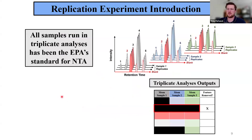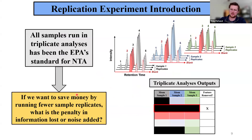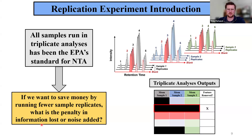To date, the gold standard for non-targeted analysis studies at the EPA has been to analyze samples in triplicate. This approach lets us evaluate variance in replicates, providing QA/QC value for determining what occurrences should be considered real. However, NTA can be quite expensive, and for stakeholders hoping to conduct large-scale studies, there's interest in potentially cutting costs if the information tradeoffs are acceptable. The impacts of reducing replicate analysis are currently unconstrained — an avenue we wanted to explore at our client's behest.